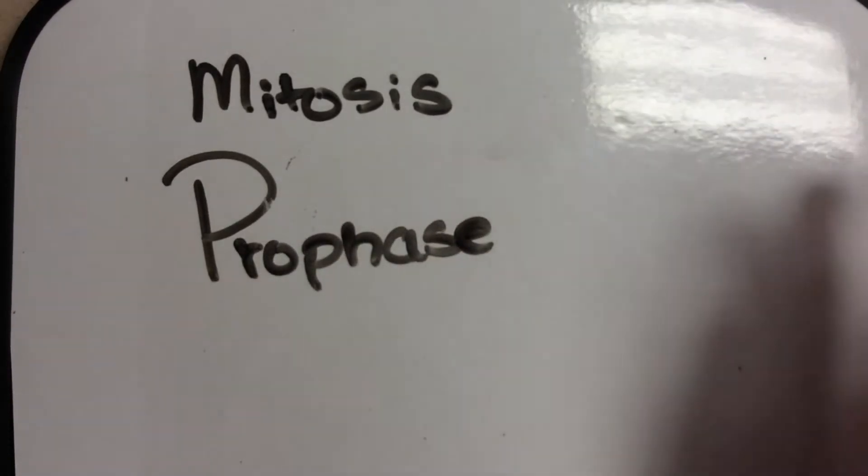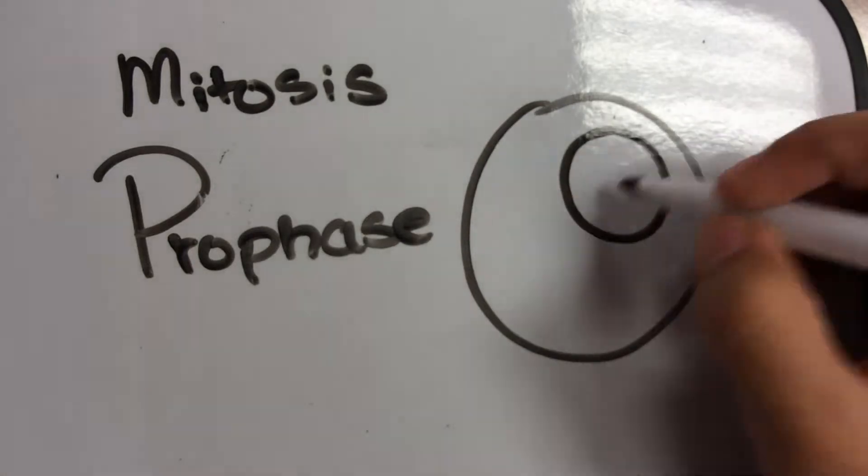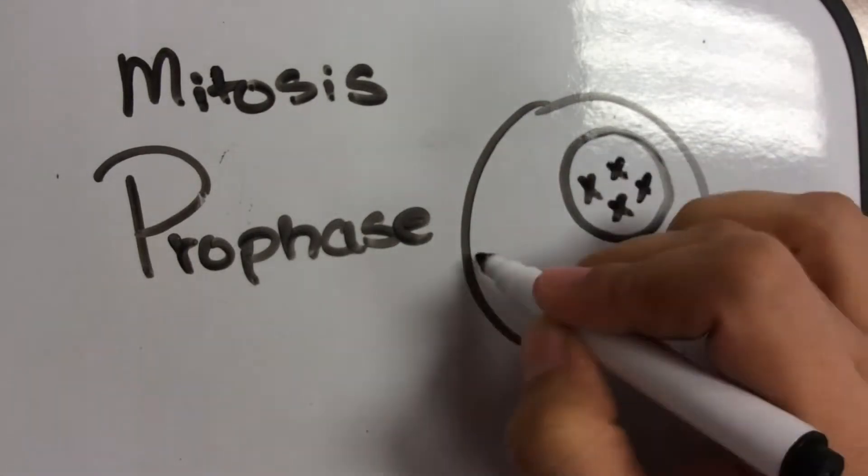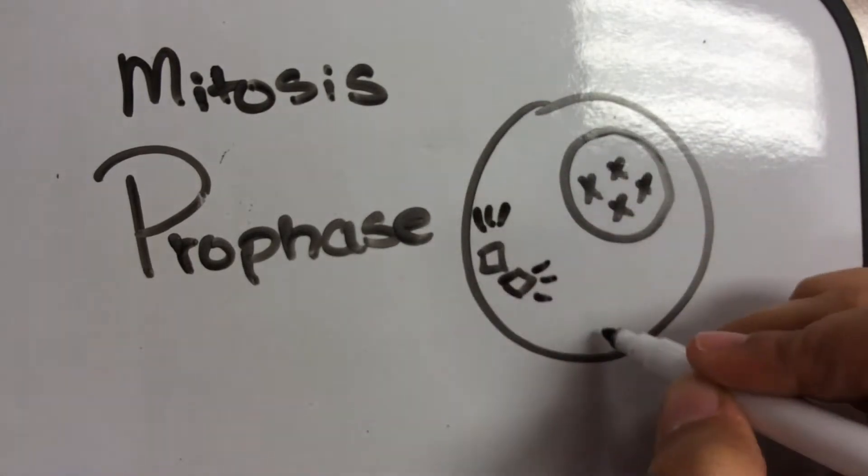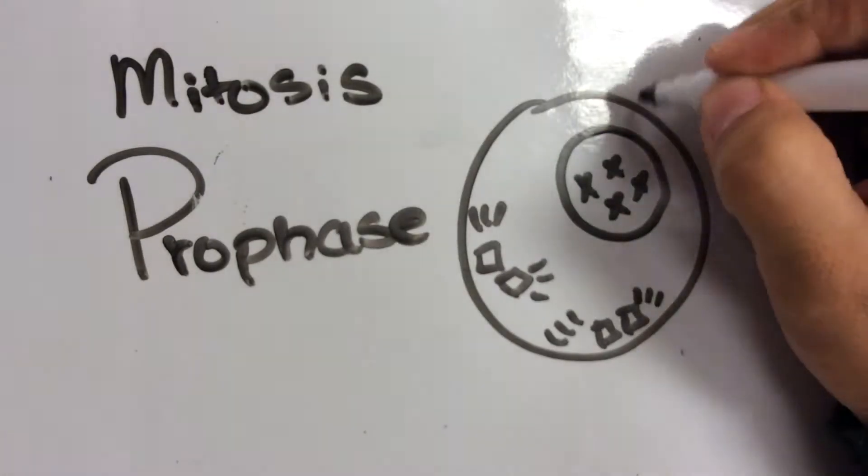Now, in prophase, you have your cell. And you have your nucleus with all your chromosomes inside. You have these centrioles with spindle fibers that are forming, getting ready to grab your chromosomes.